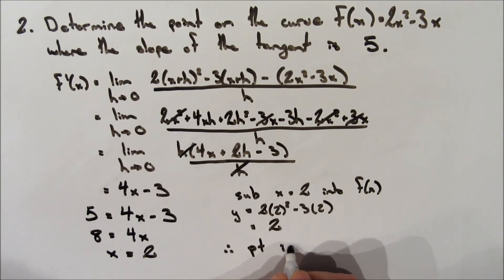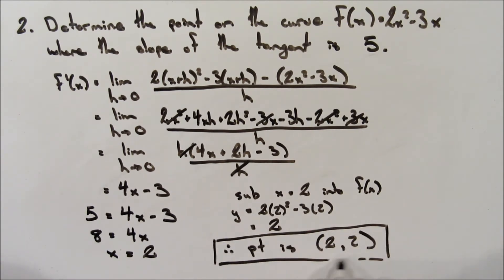So therefore, the point on the curve where the slope of the tangent is 5 is the point (2, 2). So the x coordinate is 2, and the y coordinate is 2.